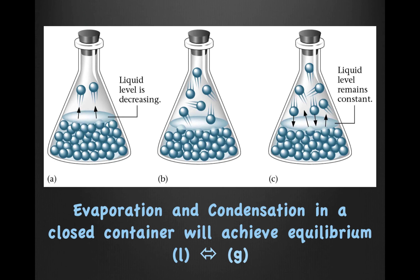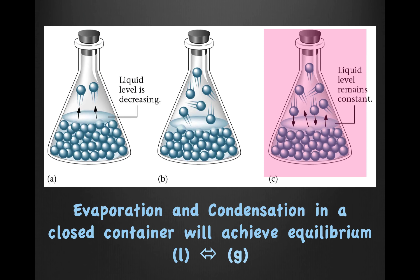Let's take a look at this example. A closed container with a liquid will eventually establish equilibrium. Evaporation and condensation in a closed container will achieve equilibrium. When does equilibrium take place? When the rate of evaporation is equal to the rate of condensation. Take a look at flask A — everything seems to just be evaporating, showing that the liquid level is decreasing. But when equilibrium is established, there comes a point where the amount of substance evaporating is equal to the amount of substance condensing, meaning the liquid level remains constant.